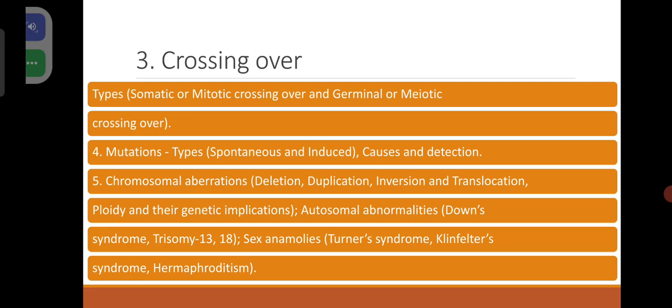Chromosomal aberrations like deletion, duplication, inversion and translocation. Ploidy and their genetic implications. Autosomal abnormalities — you have to prepare various charts, remember diagrams and the karyotype of each syndrome. Sex anomalies: Turner syndrome, Klinefelter syndrome, hermaphroditism.